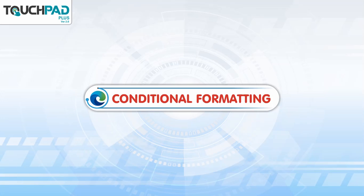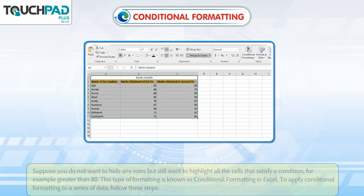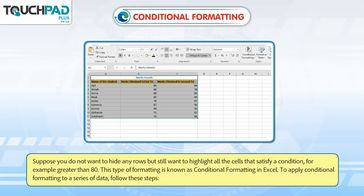Conditional Formatting. Suppose you do not want to hide any rows but still want to highlight all the cells that satisfy a condition, for example, greater than 80. This type of formatting is known as Conditional Formatting in Excel.